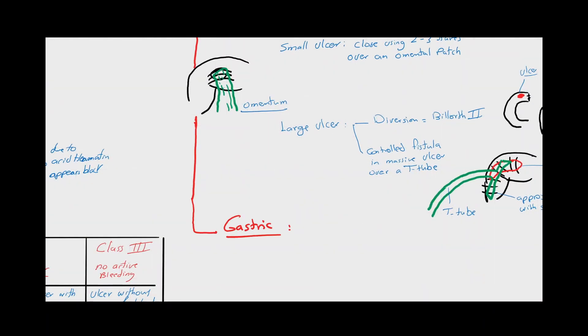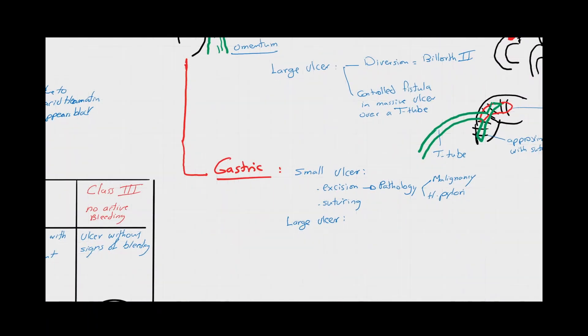Now we will talk about perforated gastric ulcers. A small perforated gastric ulcer should be taken as an excisional biopsy to exclude malignancy and examine for H. pylori, then the ulcer is sutured. The treatment of choice for a larger gastric ulcer is distal gastrectomy with Billroth 2. As malignancy cannot be excluded before the pathological findings, it is always not advised to perform a Billroth 1 operation.